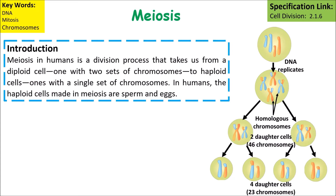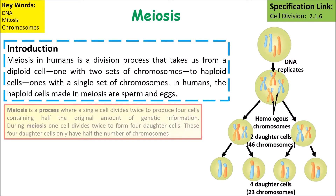Meiosis in humans is a division process that takes us from a diploid cell — one with two sets of chromosomes — to a haploid cell, which is a cell with only one set of chromosomes. Meiosis is a process where a single cell divides twice to produce four cells containing half the original amount of genetic information.